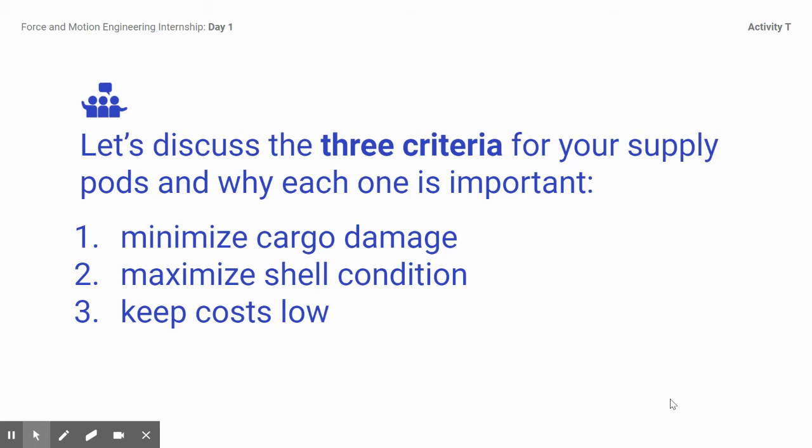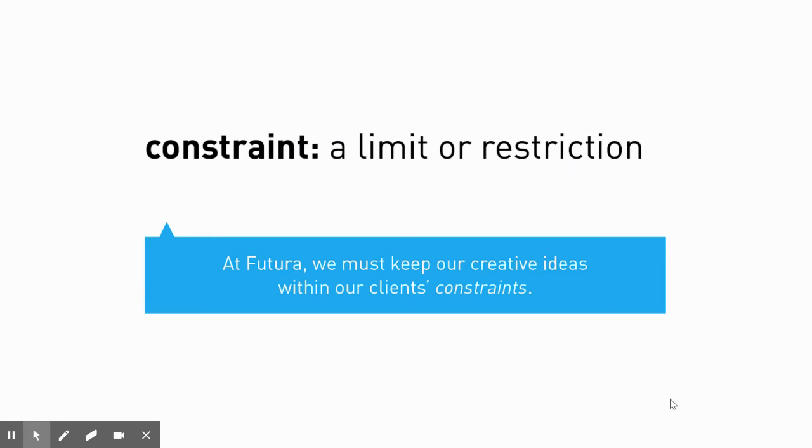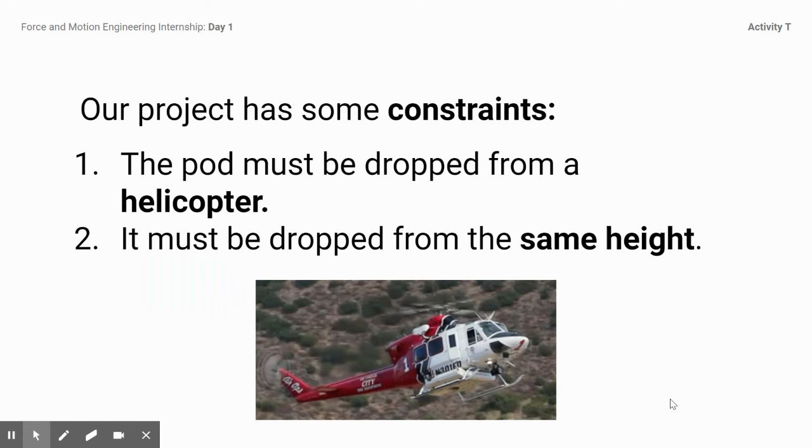So a constraint is a limit on what we're doing - kind of imagine that as the rules of the project. Some of our constraints are that the pod must be able to be dropped from a helicopter, and it must be dropped from the same height each time just to keep things consistent. Because remember, in science we want to control all of our variables, so the sim is going to help us do that.